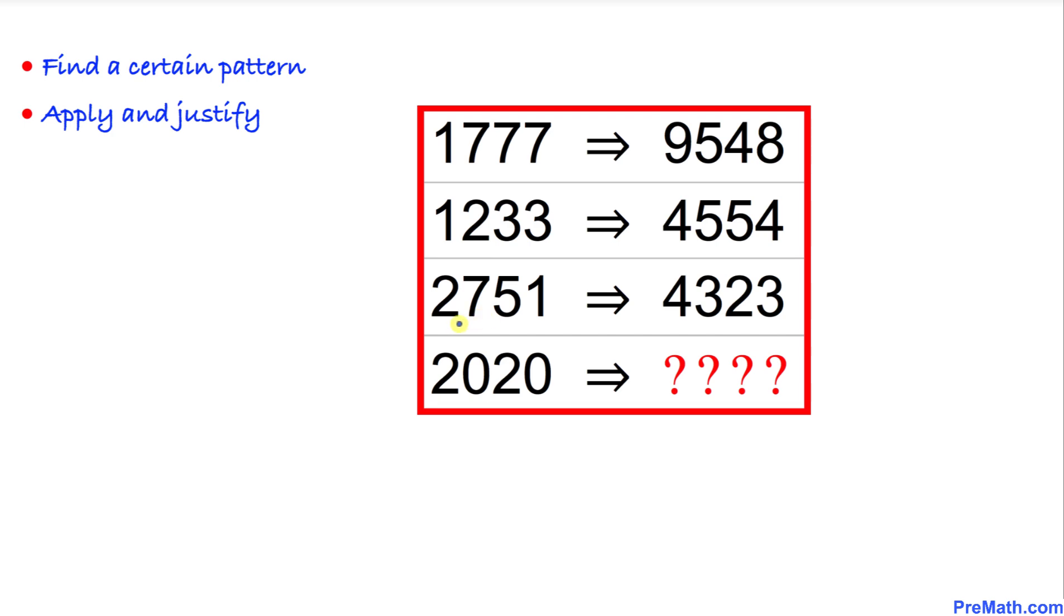Likewise for the next number, we can write in reverse order 1572. If we add these numbers, we are going to get 4323.